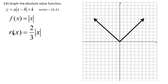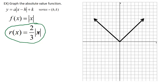Over here we've got r of x equals two-thirds times the absolute value of x. I'm going to make this my green graph. There's no h, there's no k other than (0, 0) — we're not adding or subtracting inside or outside the absolute value bars — so our vertex stays right in the center at (0, 0). But we have a number out in front, which is a, and a controls the slopes of both lines that create the absolute value function.